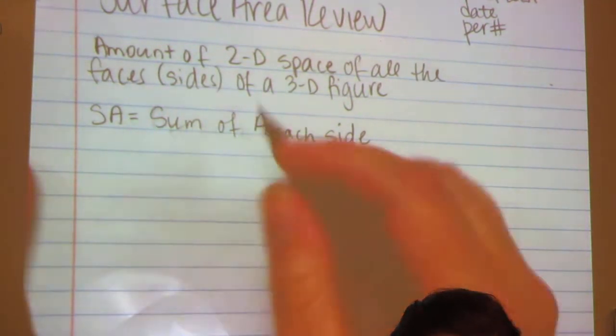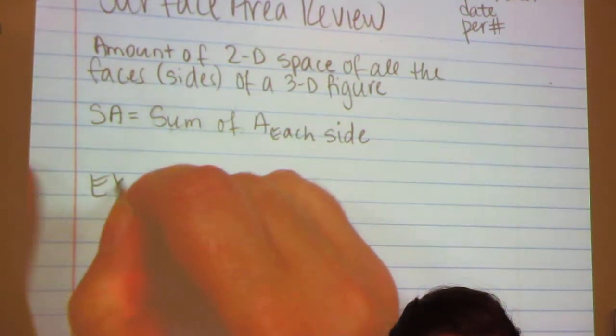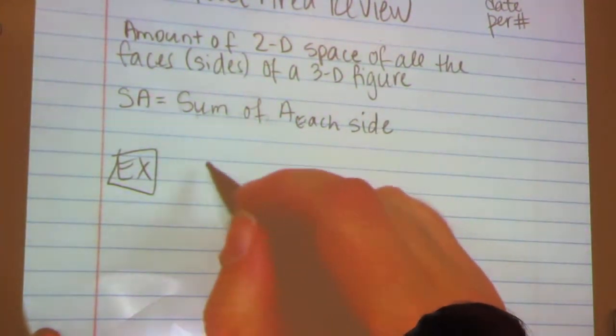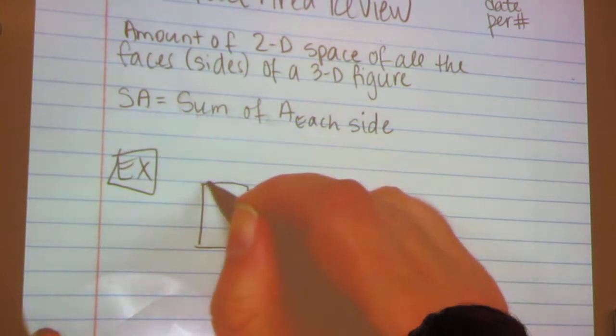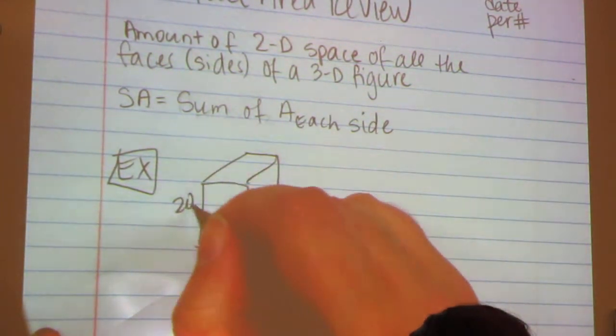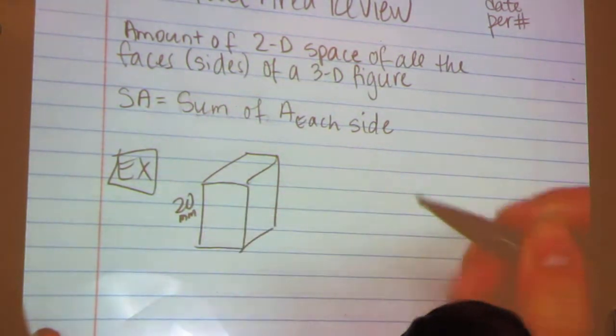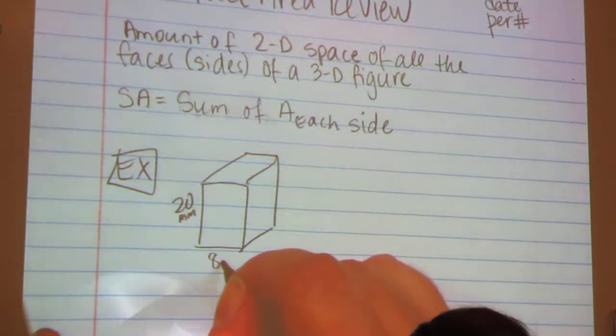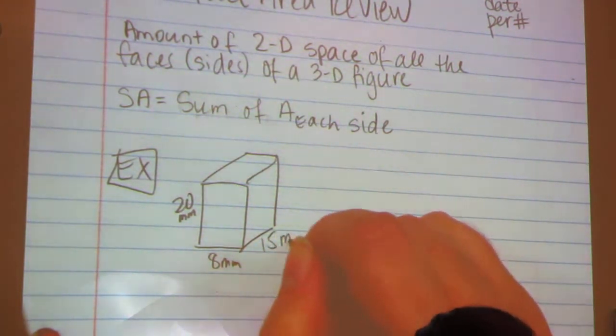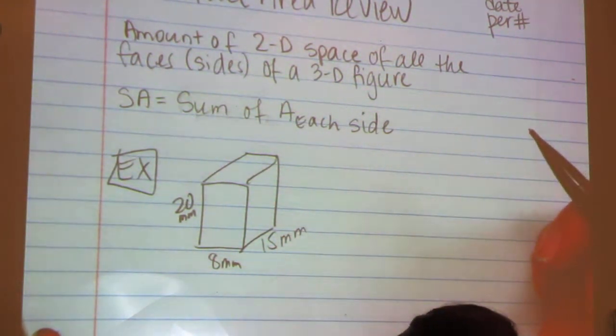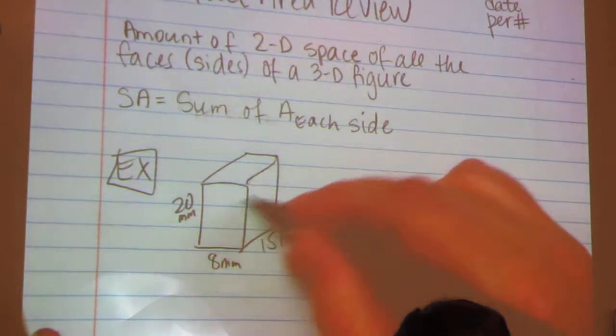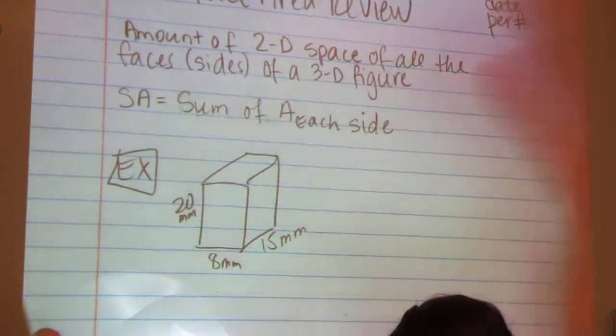For example, if you have a rectangular prism that measures 20 millimeters tall, 8 millimeters wide, and 15 millimeters deep, you would need to find the surface area of each side and then add them together.